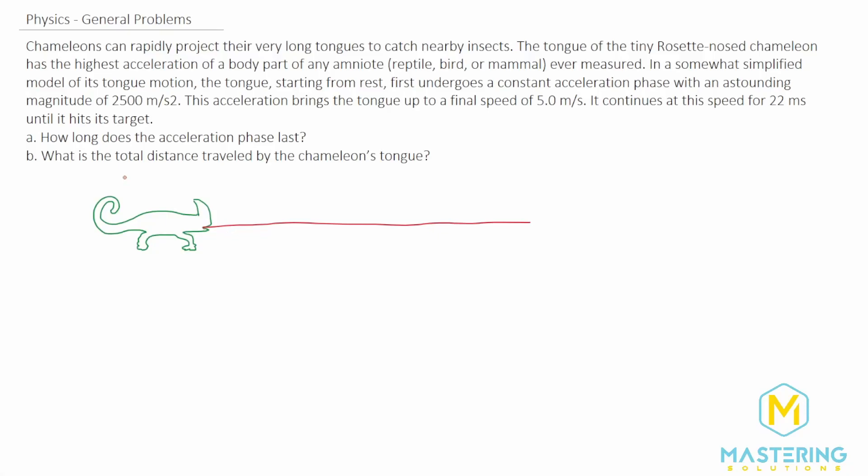Welcome to Mastering Solutions. This is another chameleon problem where they use their tongues to catch nearby insects. This chameleon, the tiny rosette nose chameleon, has the highest acceleration of a body part for any amniote ever measured.